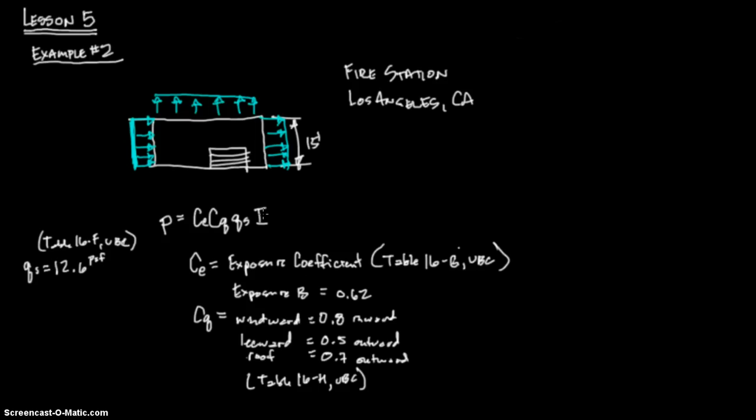Now we have QS. The last thing we have is I, importance factor. And as I said earlier, the importance factor is going to be a little bit higher in this because it is a fire station. And in this case, the fire station has an importance factor of 1.15. I equals 1.15. And this is on table 16-K, and that's reproduced on page 84 in the study guide.